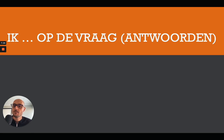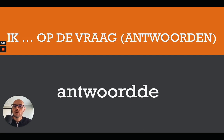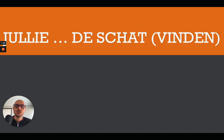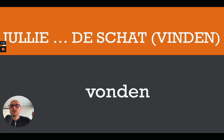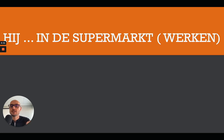Next: ik [blank] op de vraag, and the verb is antwoorden — to answer. The correct answer is ik antwoordde op de vraag — note the double d to show it's in the simple past and not the present. Then: jullie [blank] de schat, and the verb is vinden — to find. You found the treasure.